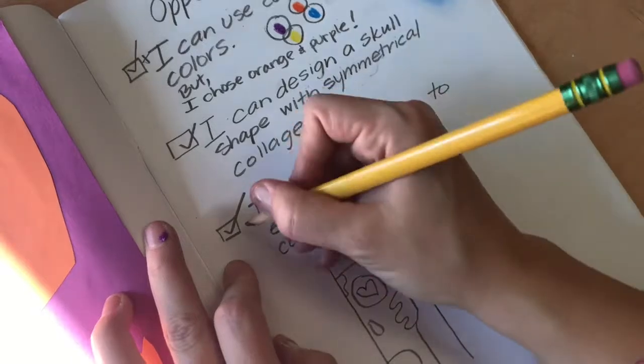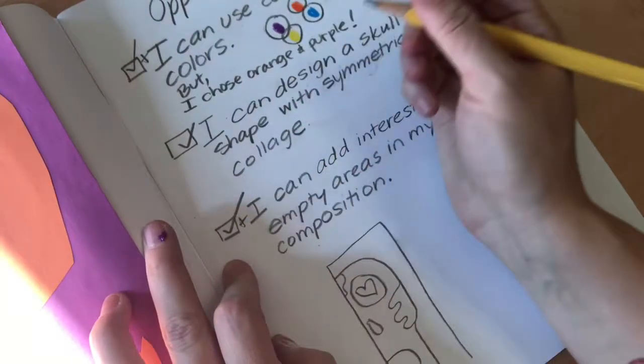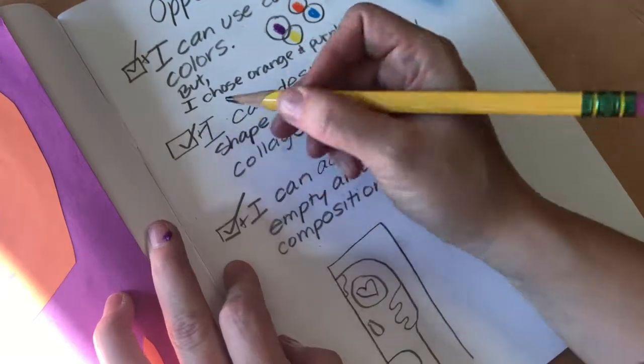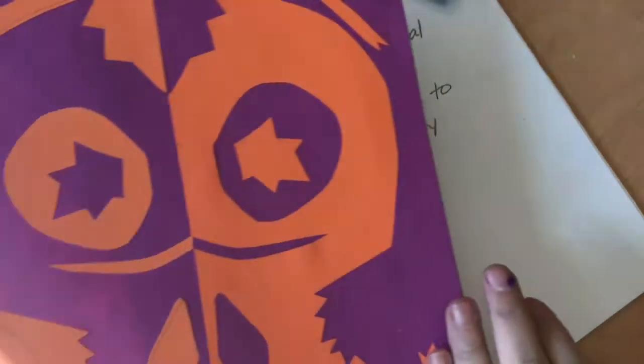Finish scoring yourself and then you can show Miss Yao your art and your checklist and then you can do the early finisher activity.